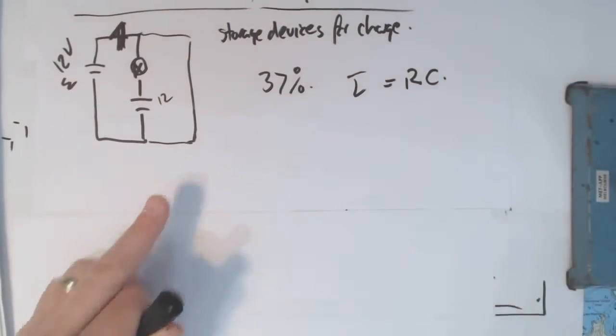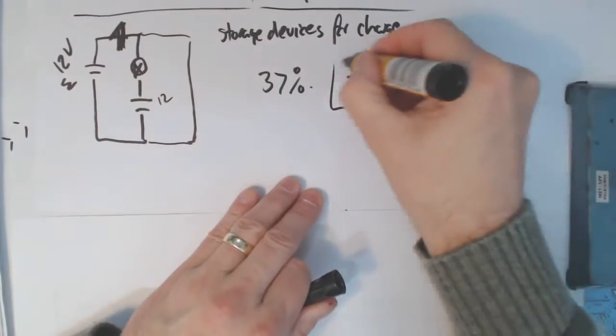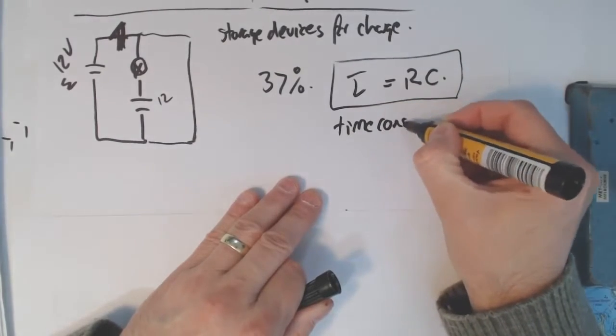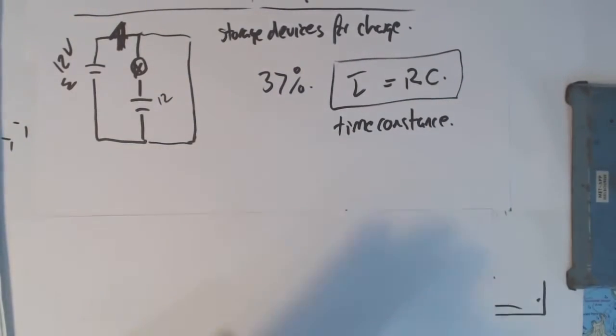Now, time constant, the formula for it, is RC. Resistance in ohms times capacitance in farads will give you a number in seconds, and it's called the time constant.